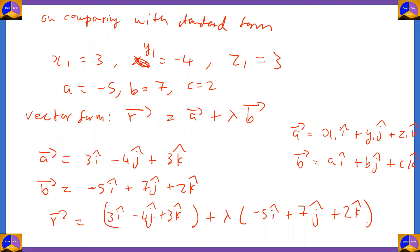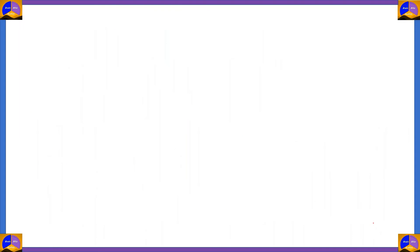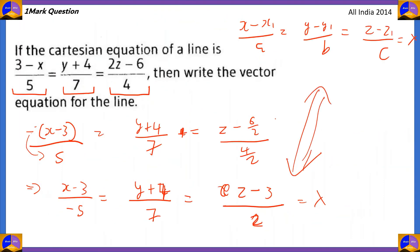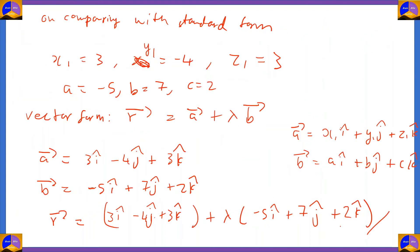So the vector equation of the line (3−x)/5 = (y+4)/7 = (2z−6)/4 is: r̄ = (3î − 4ĵ + 3k̂) + λ(−5î + 7ĵ + 2k̂).